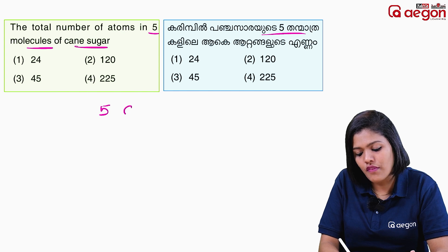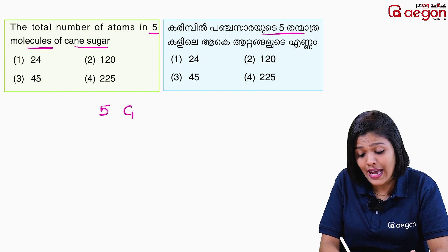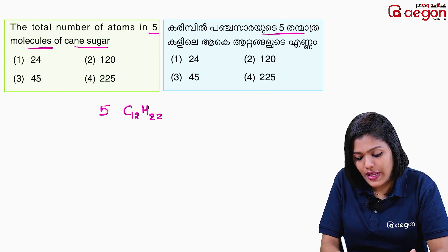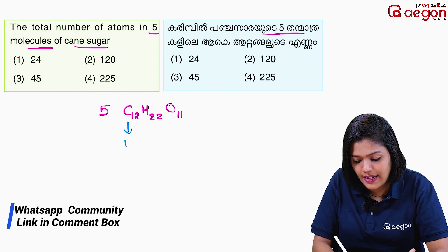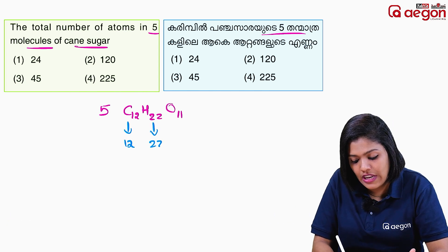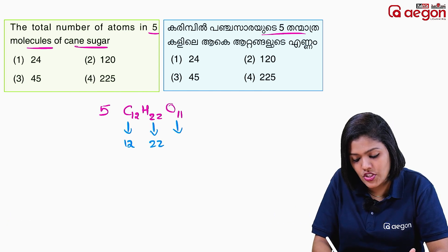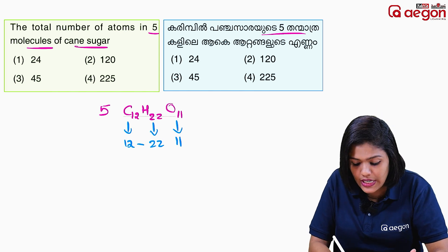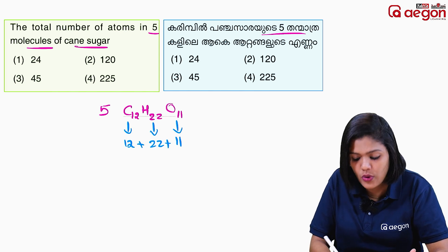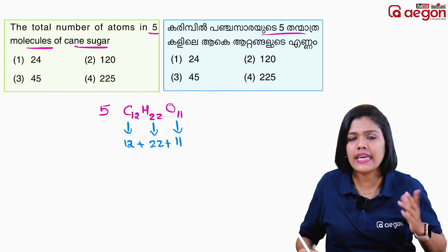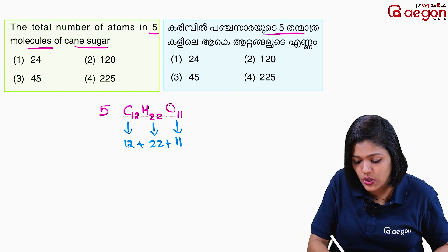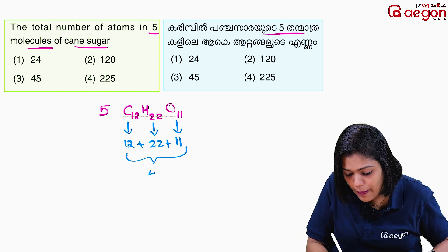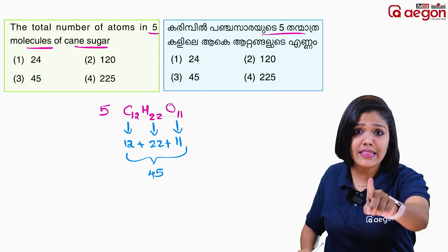Cane sugar is C12H22O11. That is 12 carbon atoms, 22 hydrogen atoms, and 11 oxygen atoms. So: 12 plus 22 equals 34, and 34 plus 21 equals 55. The answer is 55.